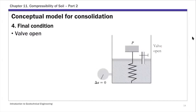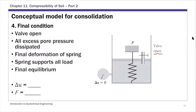Stage 4 is the final condition. The valve remains open, and all excess pore pressure has fully dissipated — the excess pore water pressure delta U returns to zero. All the load — that 50-pound force — is now carried entirely by the spring. The spring reaches its final deformed state, and that corresponds to the final settlement delta H final.